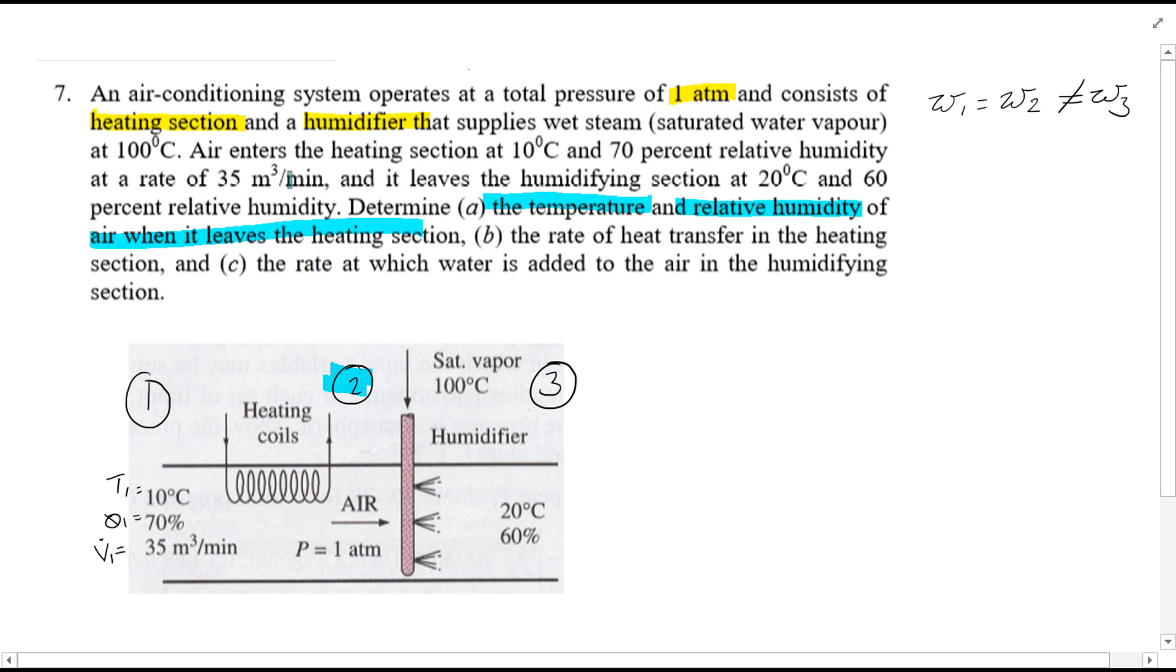So we are interested in point 2 here, we are interested in T2 and relative humidity at 2. Remember if we can find 2 values here, we then know using the psychrometric chart we can find the rest.